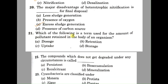Question number twenty-one: which of the following is the term used for the amount of pollutant retained in the body of an organism? A: dosage, B: retention, C: uptake, D: storage. This is a direct question and the correct answer is B, retention.